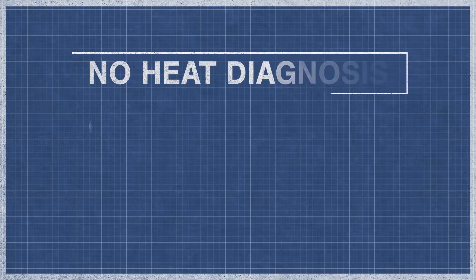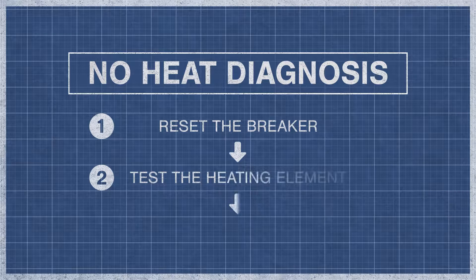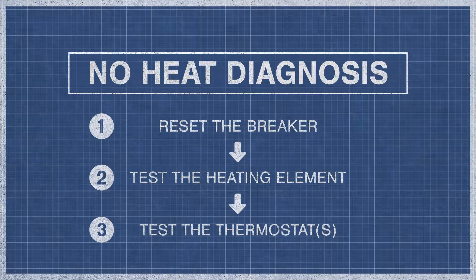When a dryer fails to produce heat, it is best to eliminate the potential problems step by step. For an in-depth guide, watch the videos below. If you've reset your breaker and your dryer still doesn't have heat, then move on to the continuity test.